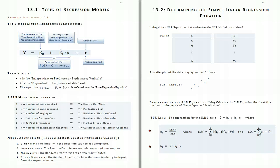Chapter 13, Section 1 introduces the Simple Linear Regression Model. The Simple Linear Regression Model indicates that a dependent or response variable y can be described as a linear function of an independent, predictor, or explanatory variable x.